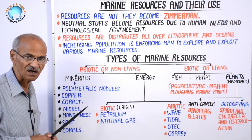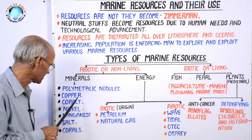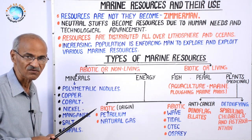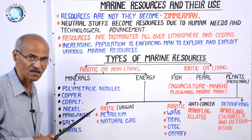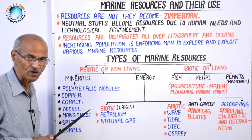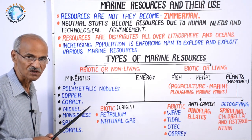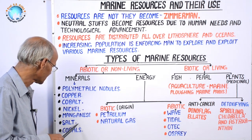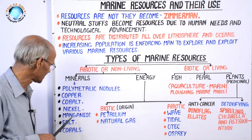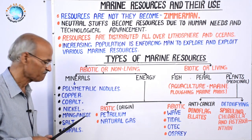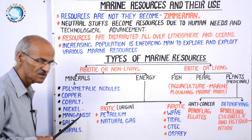These minerals are found in the Atlantic, Pacific, and Indian Oceans. In the Indian Ocean, near Diego Garcia, India has a 75,000 km² area where these minerals are found, and India is exploring and trying to exploit them with the help of the aqua jeep provided by German technology.